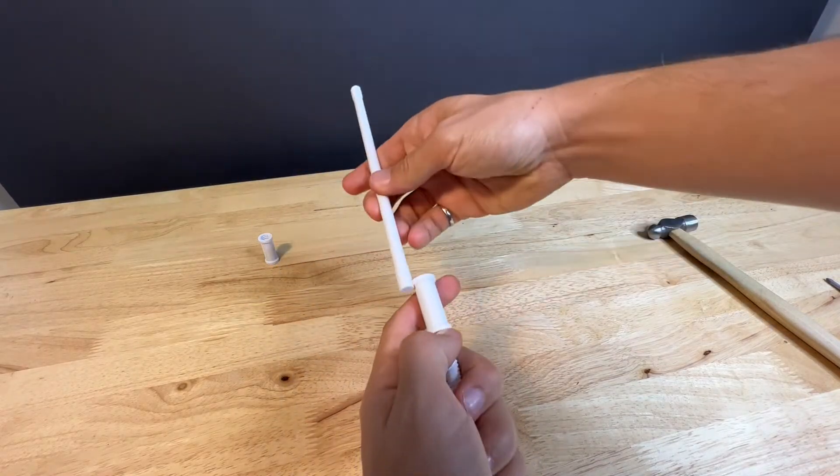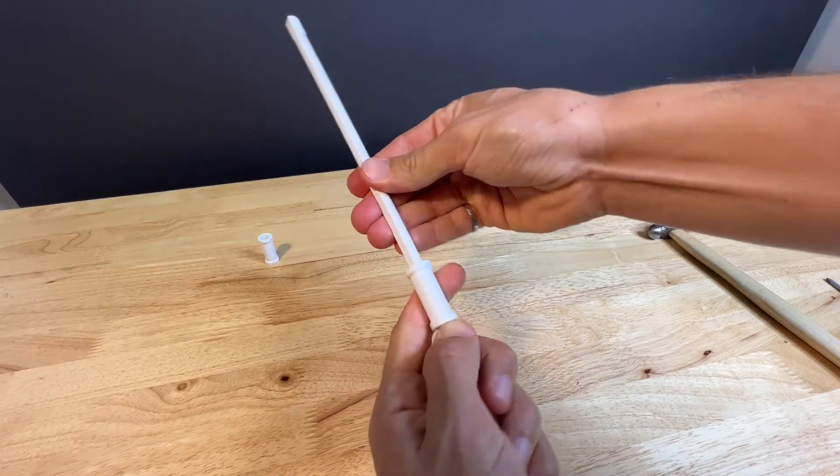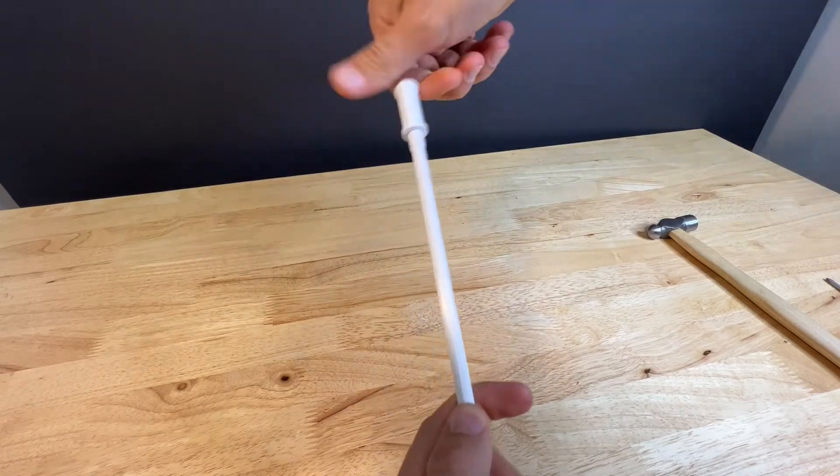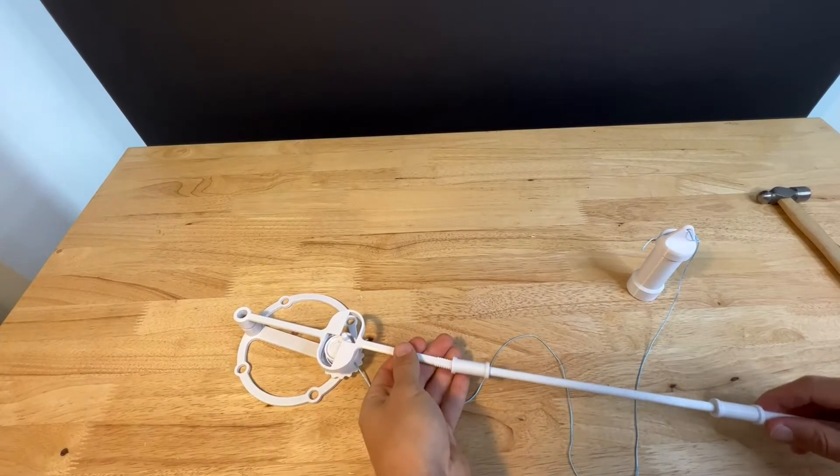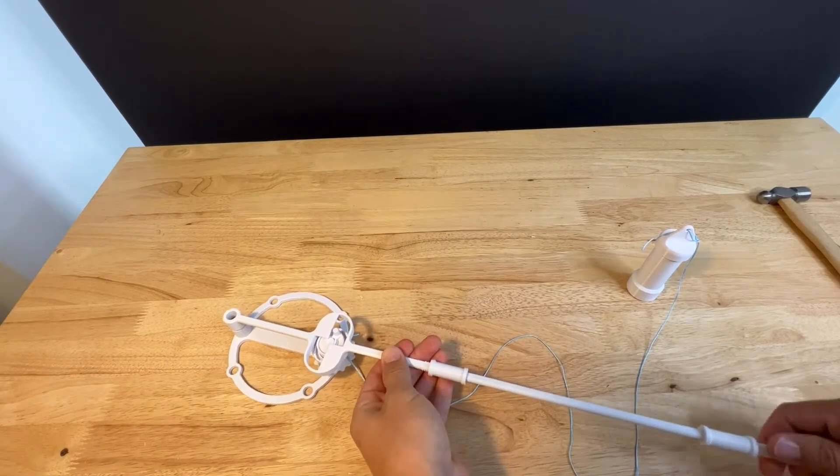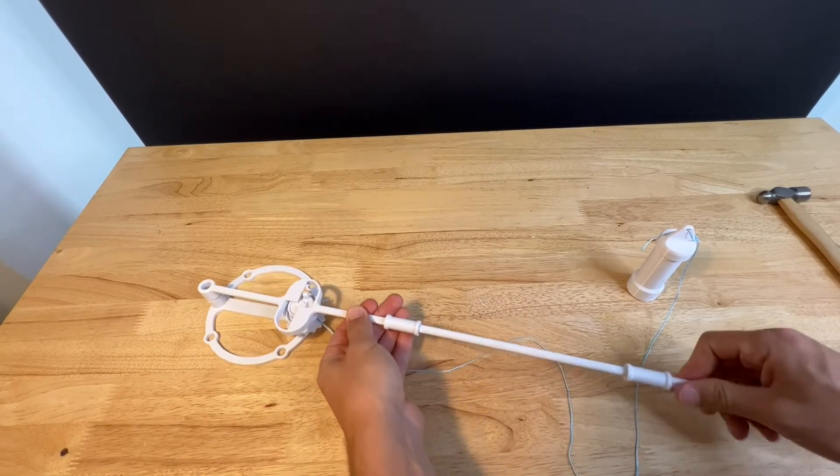Now this extension is optional, but if you're using it, screw it into place. Screw the other adapter into place on top of that, and then we're going to attach the entire pendulum to the escapement, and once that's on, we're ready to move to the wall.